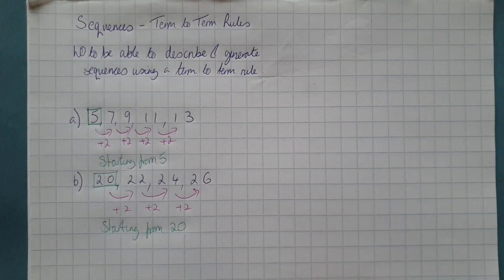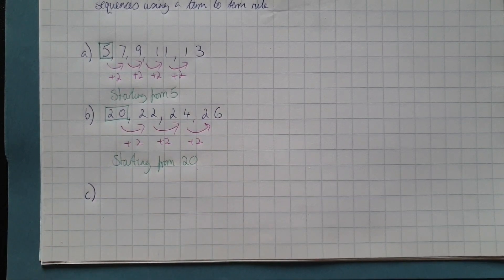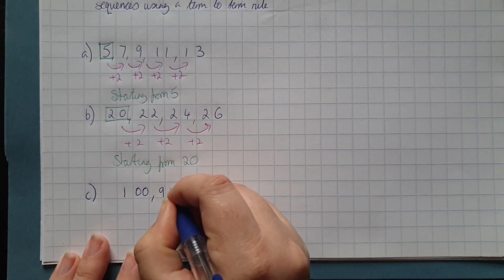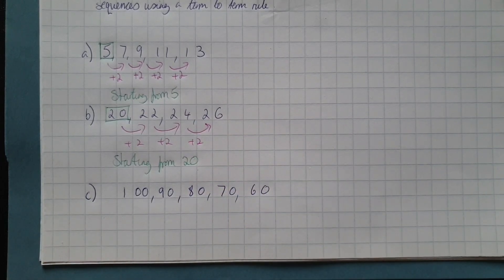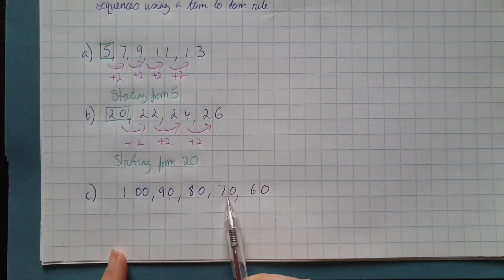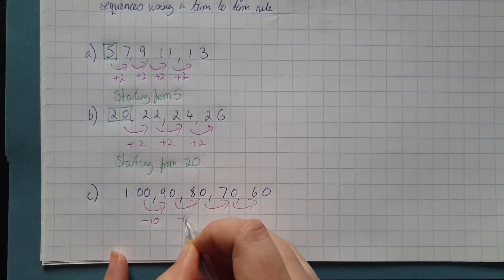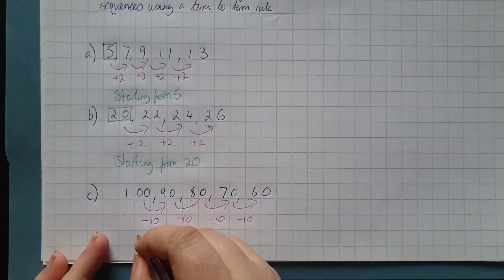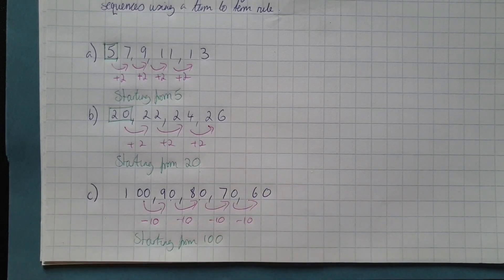Let's do another couple of examples. The sequences don't only have to go up — they can also go down. Looking at the terms, we're going from one to the next, and this time as we go through, we are going down. So we are subtracting 10. And we are starting from 100.